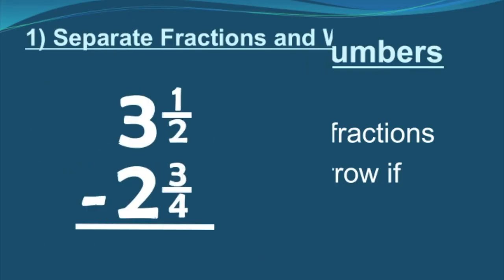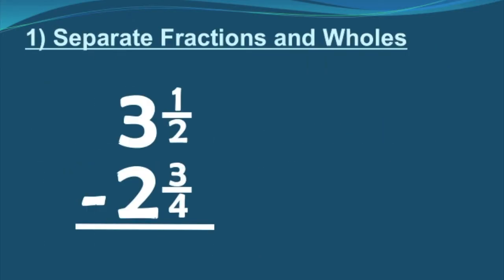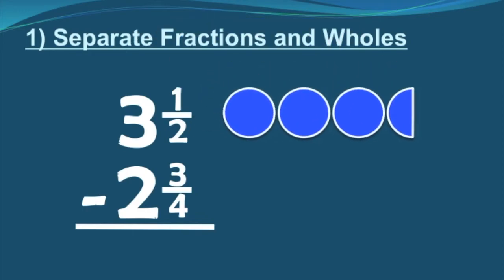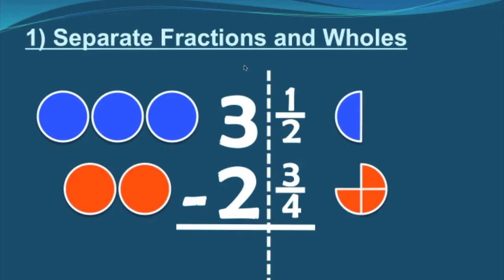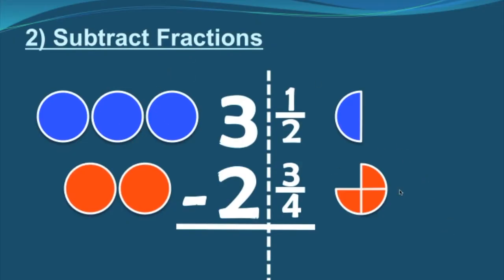Let's take an example with another visual representation: three and a half minus two and three fourths. Step one says to separate our fractions and wholes — we bring our wholes to the left and keep our fractions on the right. Step two is to subtract the fractions. We're trying to subtract one half and three fourths. Before we try anything, we have to have the same denominator, so that changes one half to two fourths. But now I've got two fourths minus three fourths — I don't have enough to take away from. So I cannot subtract and will need to borrow.